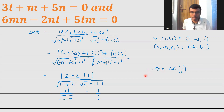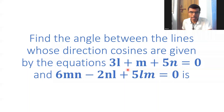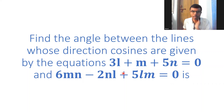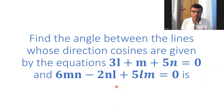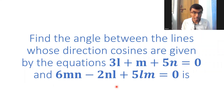Therefore theta equals cos inverse of 1 by 6. That's it, the question is done. The angle between the two lines whose direction cosines are given by those two equations is cos inverse of 1 by 6. Thank you very much for staying with me. We have made many other questions related to mathematics — you can go through my channel and find various playlists. If you like this video solution, please hit the like button and subscribe if this is your first time. Once again, I'm Akash. Thank you.